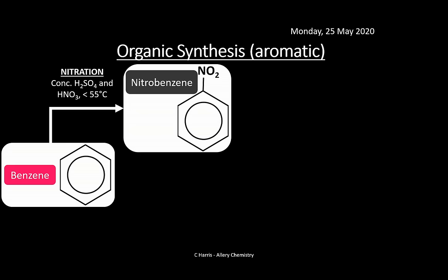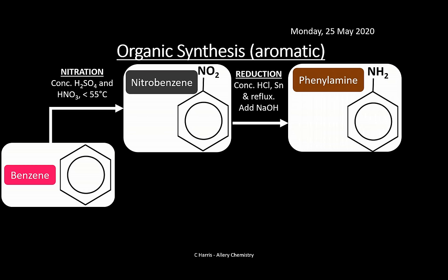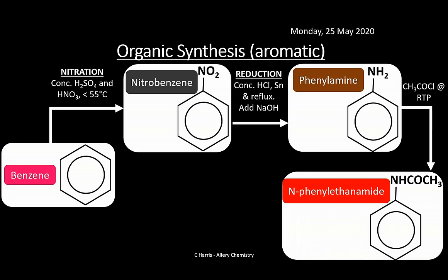Continuing from nitrobenzene: reduce it to produce phenylamine (–NH₂) using concentrated hydrochloric acid, tin, reflux, and sodium hydroxide. You can then react phenylamine further to form N-phenylethanamide by reacting with an acid chloride at room temperature and pressure — the acid chloride reactions you'll have seen in the carboxylic acids and derivatives topic.